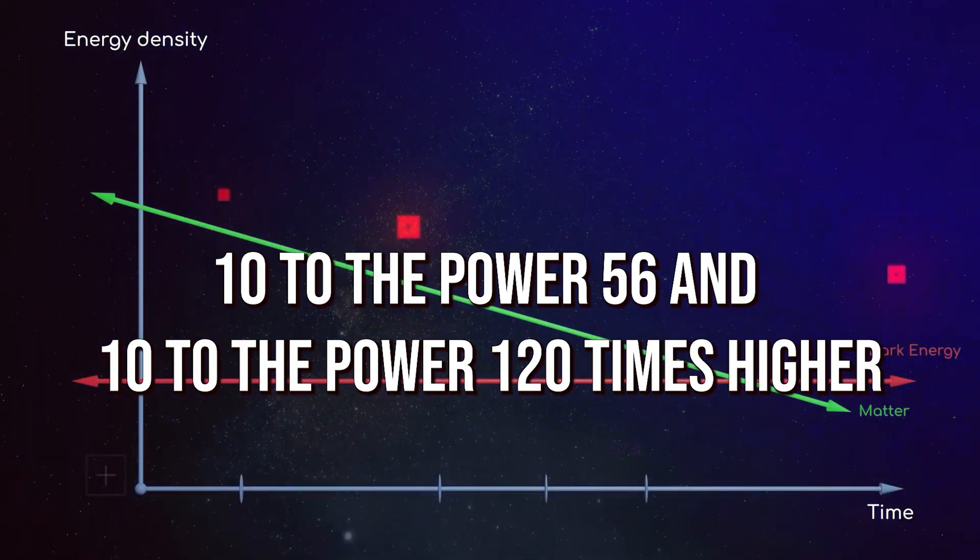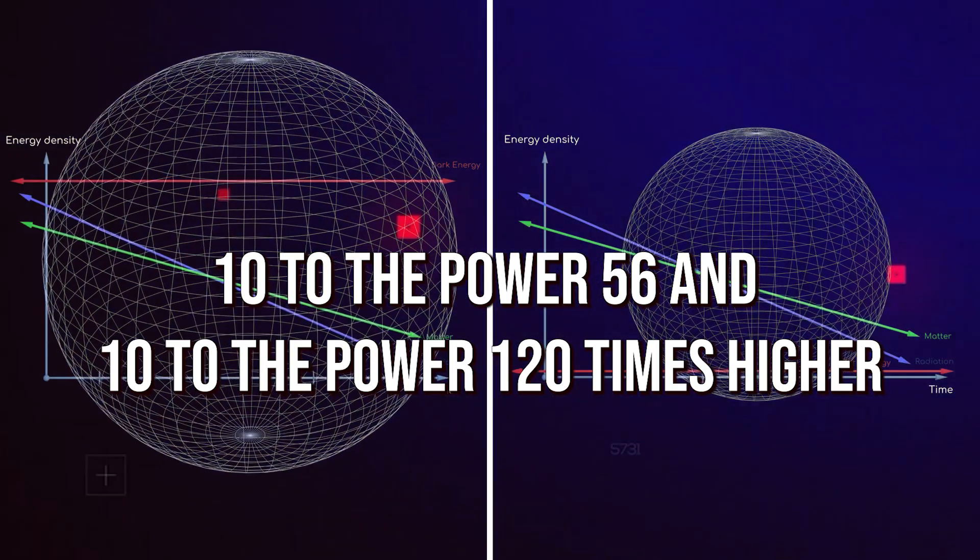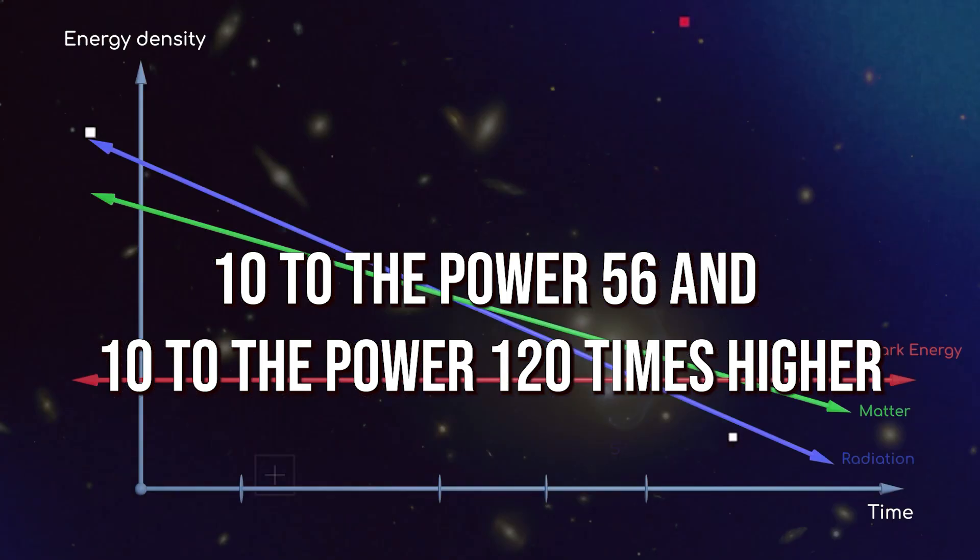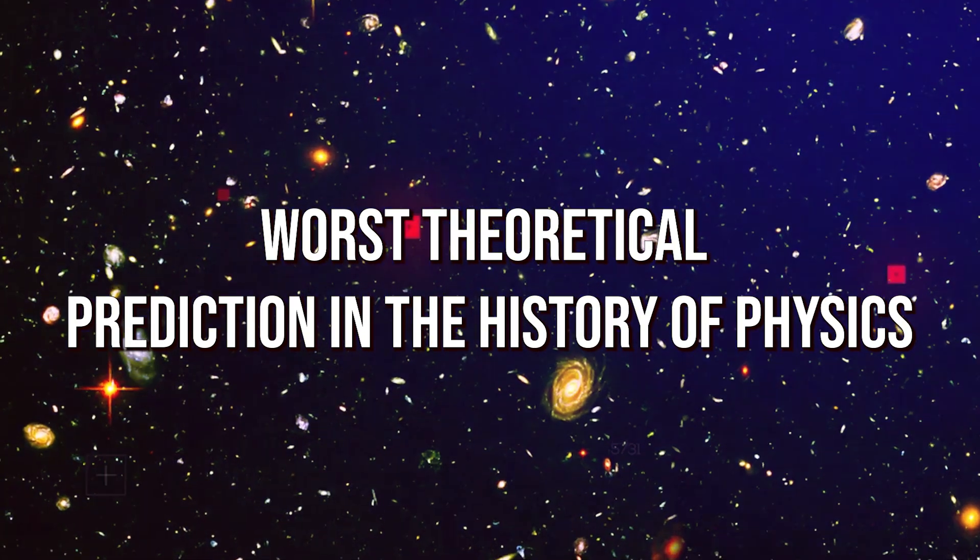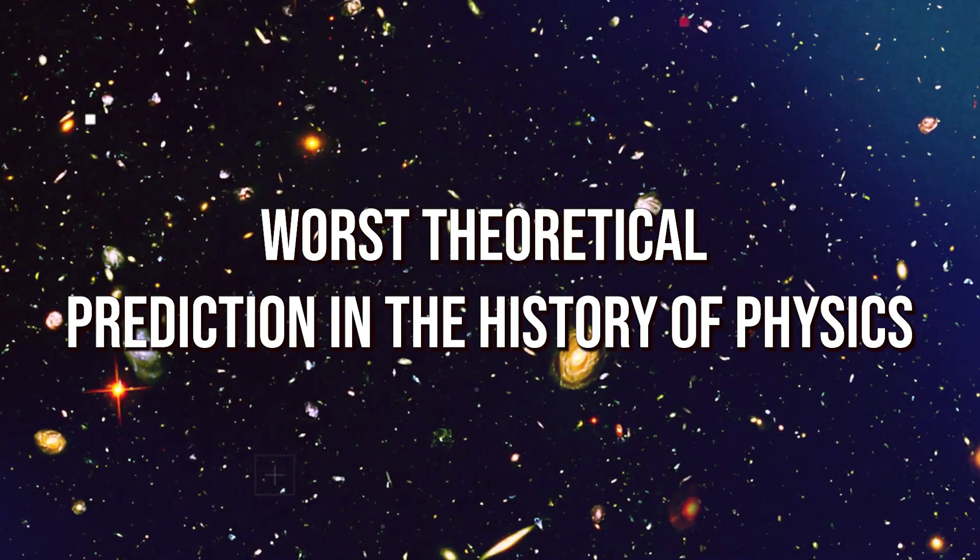Somewhere between 10 to the power 56 and 10 to the power 120 times higher than it is. That's more than a little off. That's so far off it's been called the worst theoretical prediction in the history of physics.